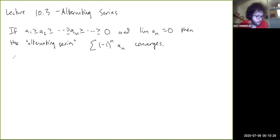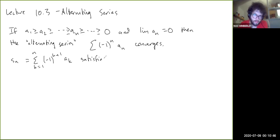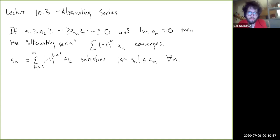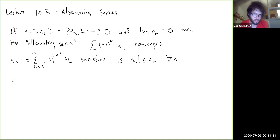The book also adds that s_n, the partial sum from k=1 to n of (-1)^(k+1) * a_k, satisfies |s - s_n| ≤ a_n for all n. Of course, once you show that the series converges, that's what allows us to make this statement, because we have to show that s itself exists. But it's not too hard to show that this series converges.